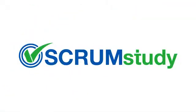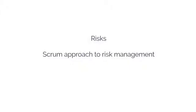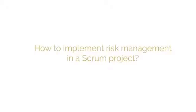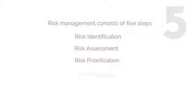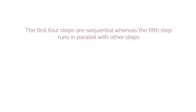Now that we understand what risks are and the Scrum approach to risk management, let's discuss in detail how to implement risk management in a Scrum project. Risk management consists of five steps: risk identification, risk assessment, risk prioritization, risk mitigation, and risk communication. In this procedure, the first four steps are sequential, whereas the fifth step runs in parallel with the other steps.